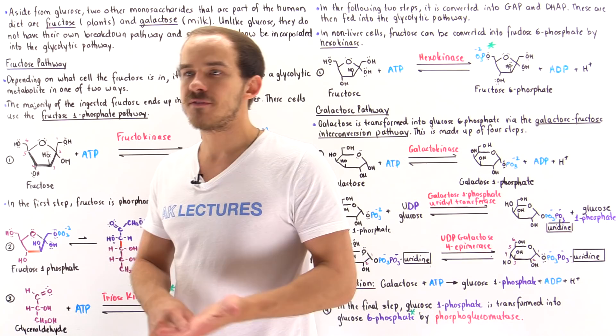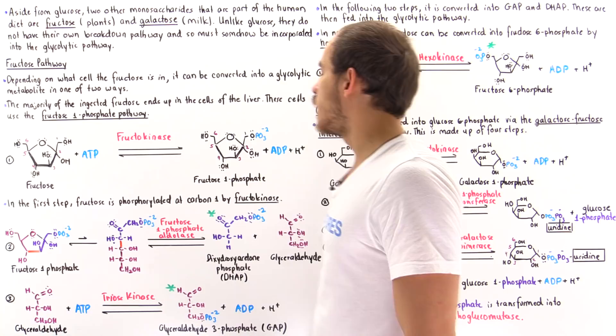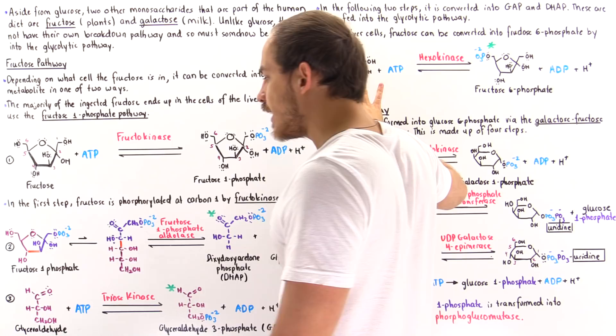So this is what the fructose 1-phosphate pathway looks like, and this is the pathway followed by liver cells. If fructose makes its way into the cells of our liver, this is how it is transformed into molecules that can be fed into the glycolytic pathway. In other tissues — non-liver cells — a simpler pathway is followed.